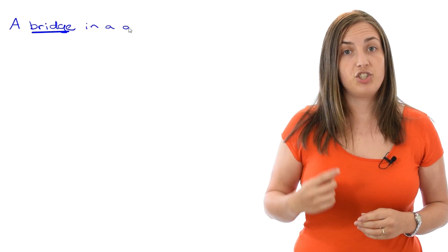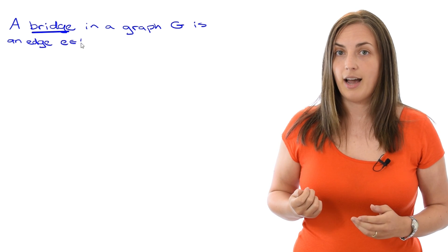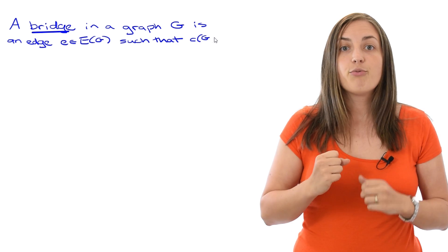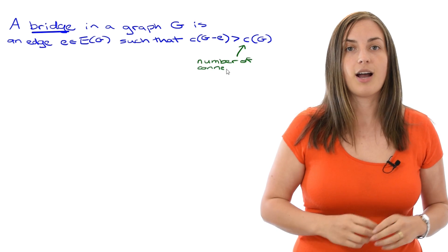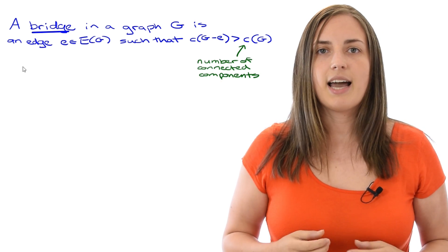So let's start off by thinking about a bridge. A bridge in a graph G is an edge E of the graph such that the graph without that edge has more connected components than the graph originally had. Let's take a look at an example.